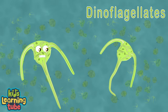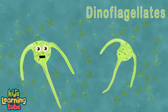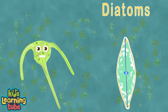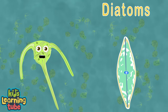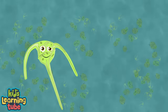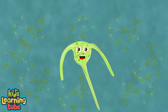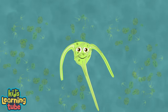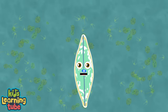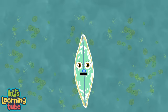Dinoflagellates use a whip-like tail to move through the water, and their bodies are covered with a complex shell. Diatoms also have shells, but they're made of a different substance, and their structure is made of interlocking rigid parts. We rely on ocean currents to travel through the water. Every breath that you take in that is full of oxygen was created by us — the amazing phytoplankton.